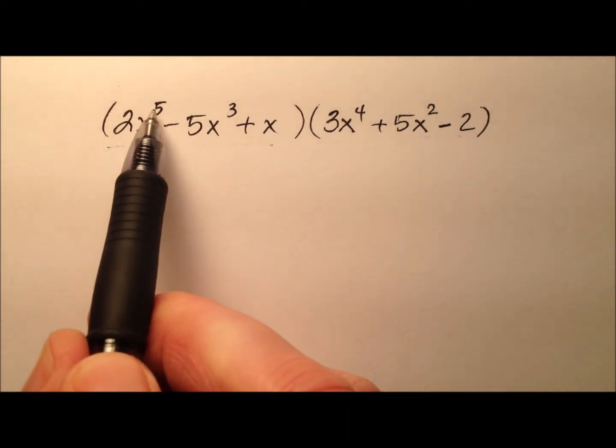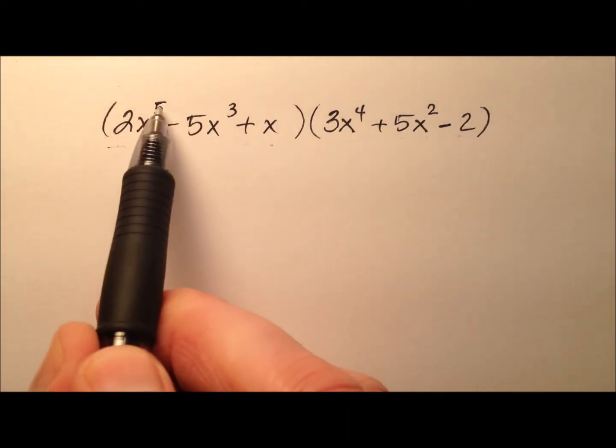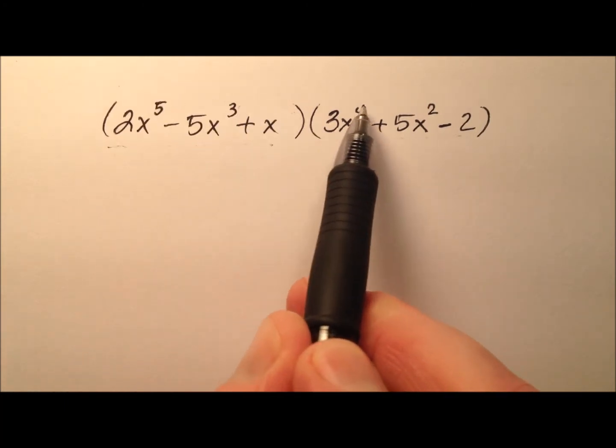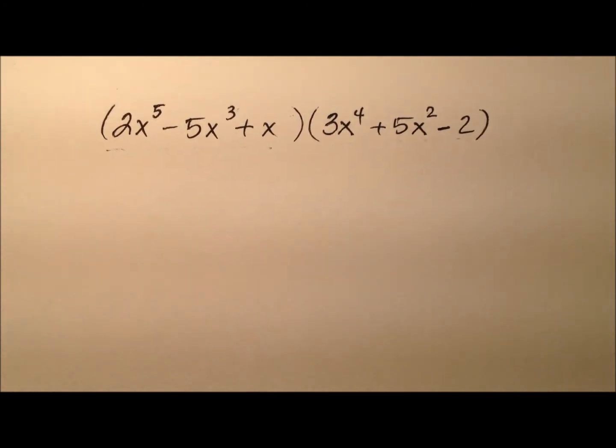but you'll notice the powers aren't right next to each other. It's not like 2, 1, 0. It's kind of 5, 3, 1, and then 4, 2, 0. So let's go ahead and multiply these and see what happens.